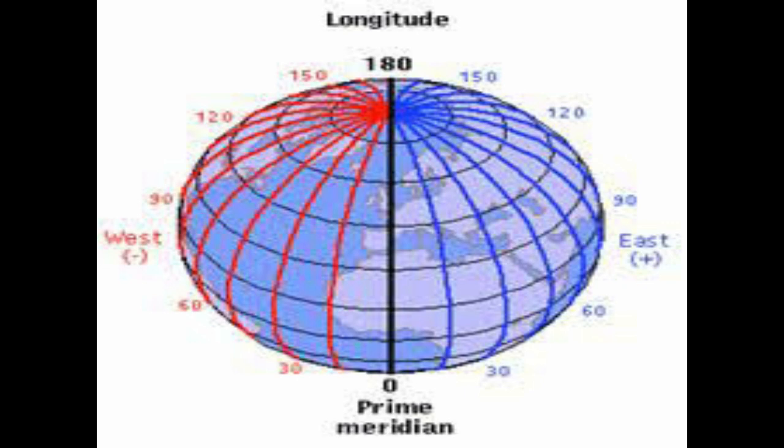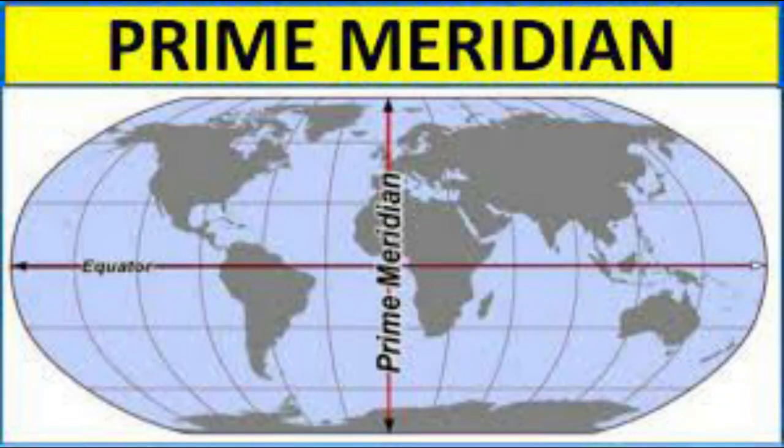Before we begin, let us establish some basic facts about lines of longitude. What are longitudes? The imaginary lines drawn vertically connecting the north pole and the south pole are called lines of longitude, or meridians of longitude. All lines of longitude are semicircles. Next, what is the prime meridian?